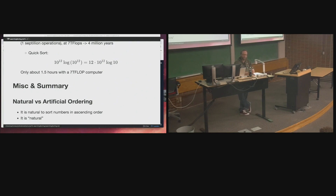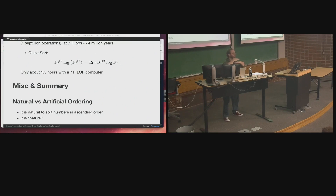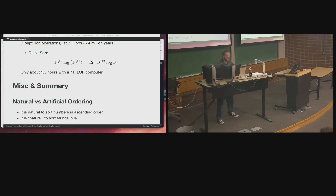What may seem natural to us as English speakers — alphabetic ordering — is not natural as far as programming goes. The natural order with respect to strings is lexicographic ordering: going to the ASCII text table and looking up their numerical values. To us, 'Apple' with a capital A and 'apple' with a lowercase a would appear right next to each other, but in lexicographic ordering that doesn't happen. Capital-letter words come first, then lowercase words.